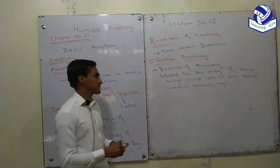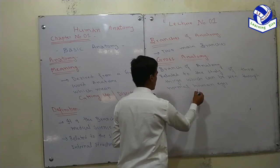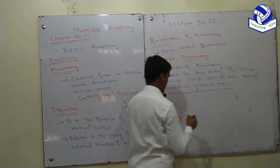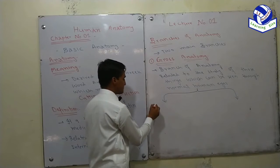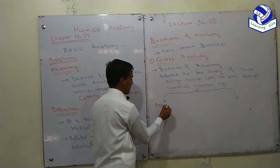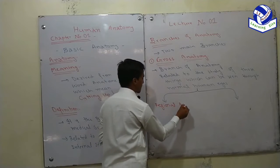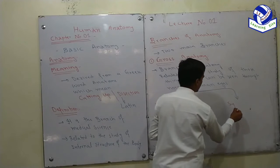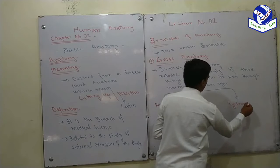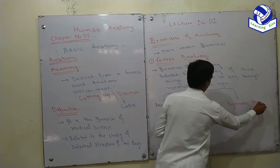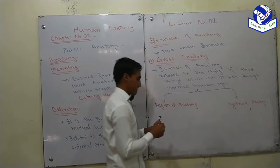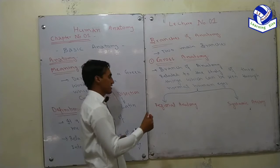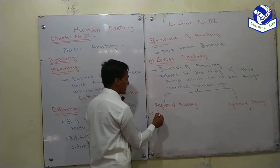Gross anatomy is further divided into two branches. The first one is regional anatomy and the second one is systemic anatomy. Regional anatomy is the branch of gross anatomy in which we study a specified region of the body. In regional anatomy we study a specified region.